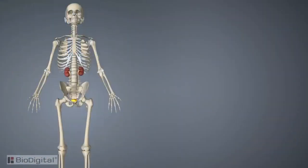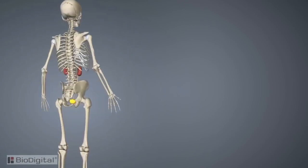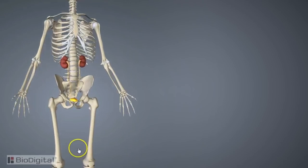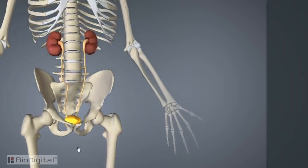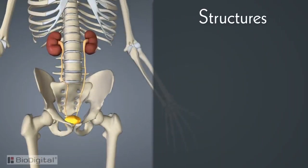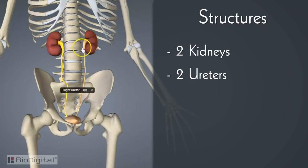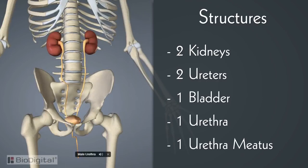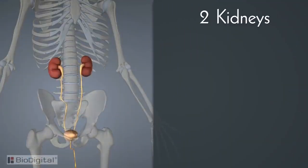The urinary system, much like the integumentary system, doesn't have many parts, but they are truly essential to the survival of the human organism. The basic anatomical structures of the urinary system are: two kidneys, two ureters, one bladder, one urethra, and the urethral meatus.